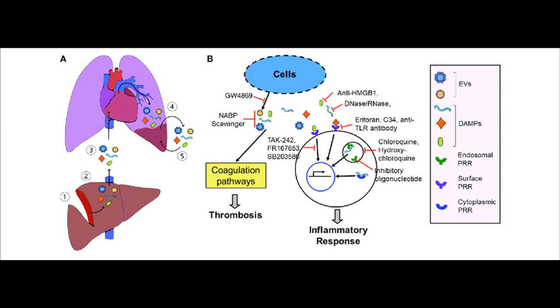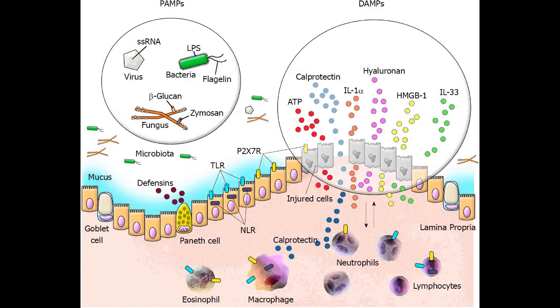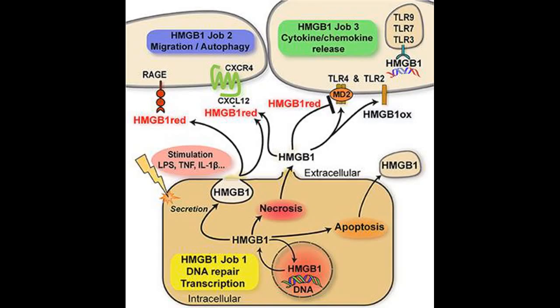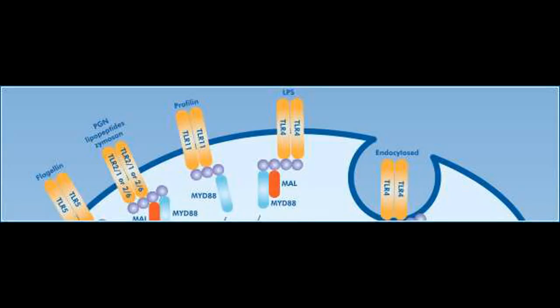DAMPs may be produced as a result of cell damage caused by infections, but they may also indicate sterile injury to cells caused by myriad reasons, such as chemical toxins, burns, trauma, or decreased blood supply. DAMPs are generally not released from cells dying by apoptosis. In some cases, healthy cells of the immune system are stimulated to produce and release certain DAMPs, sometimes called alarmins, which enhance the innate immune response to infections.